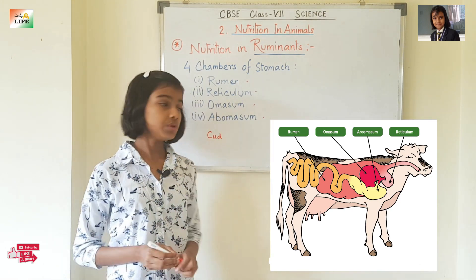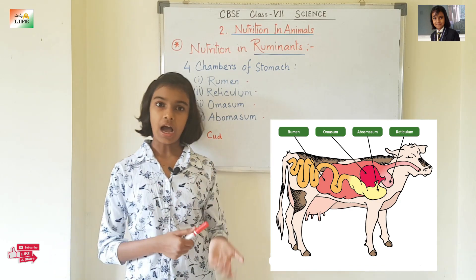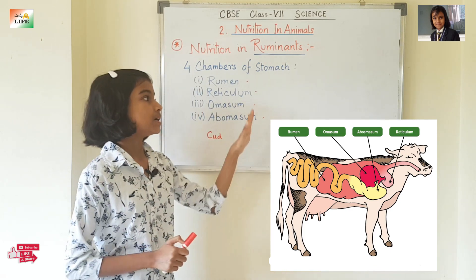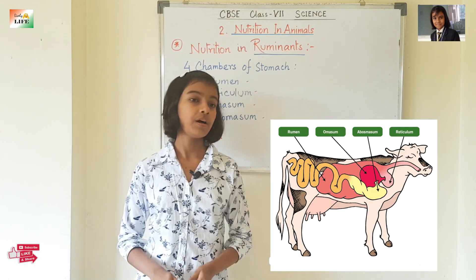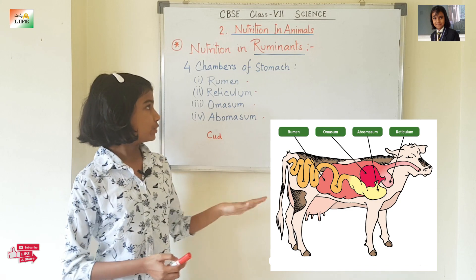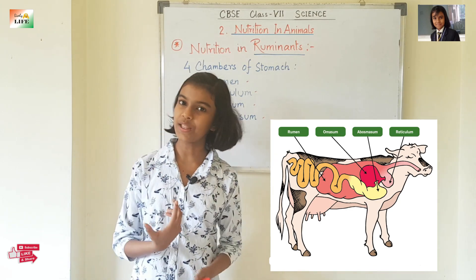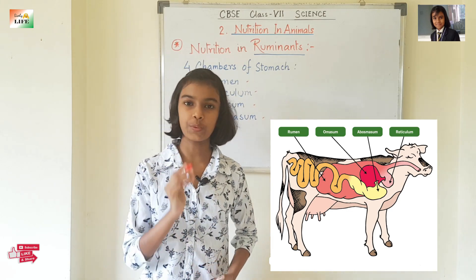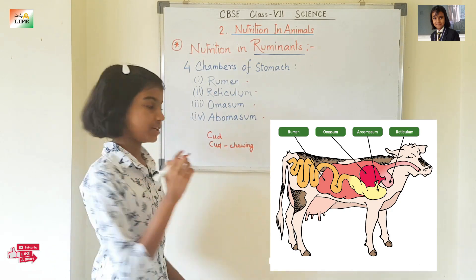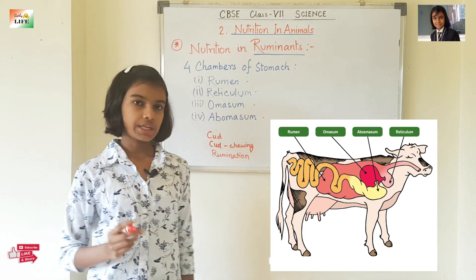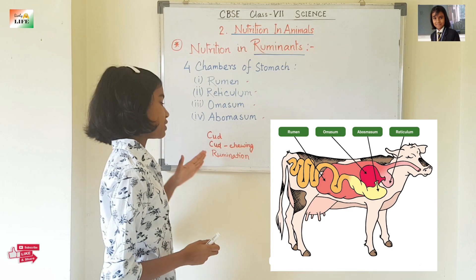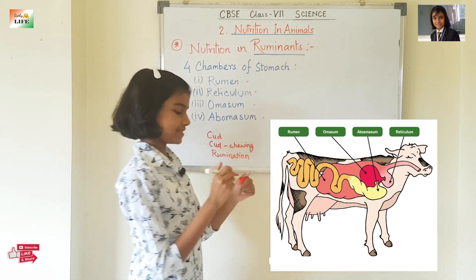This partially digested cud is stored inside the ruminant. We have often seen that a cow or goat appears to be chewing even when no grass is present. What actually happens is that during their leisure time, the ruminants bring the stored cud back into their mouth and fully chew it again, then swallow it. This process is known as cud chewing or rumination, and that is why these animals are called ruminants.